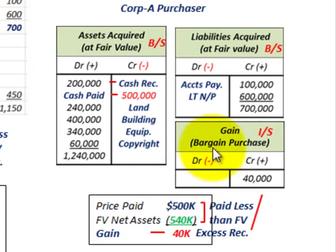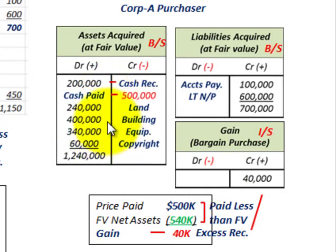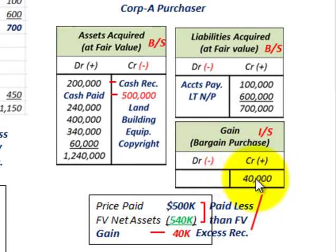This is how we would handle buying a business where you pay less than the fair value of the net assets received. It would normally be through a forced liquidation or a distressed sale. The idea is that you could sell off these assets at their fair value, and it would be worth more than the price that was paid. The company that's buying it would recognize a gain — and that's the theory behind it. You still have to recognize the gain if the price paid is less than the fair value of the net assets received.